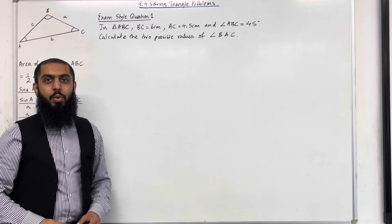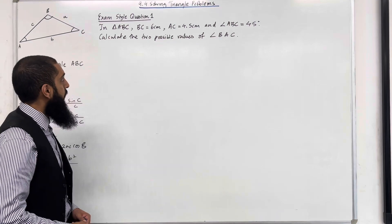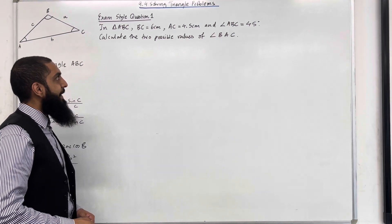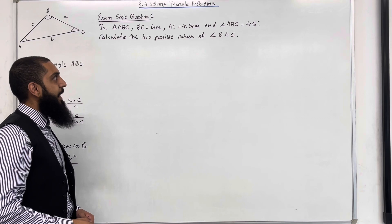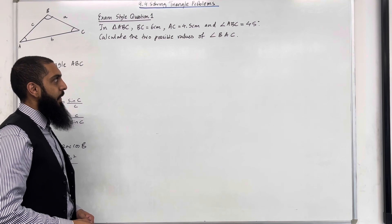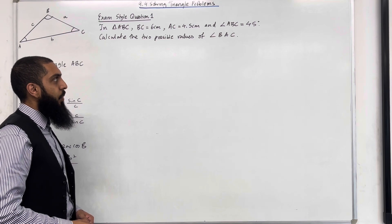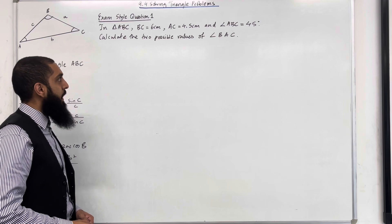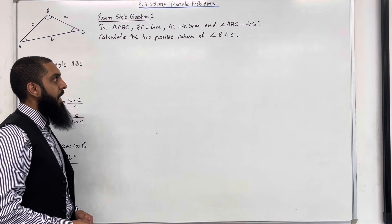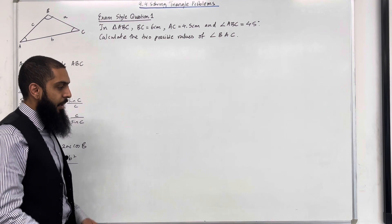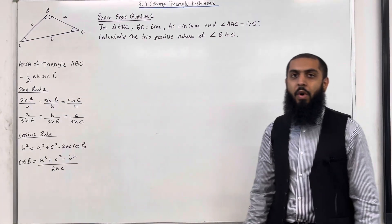Here is exam-style question 1. In triangle ABC, BC is equal to 6 cm, AC is equal to 4.5 cm, and angle ABC is equal to 45 degrees. Calculate the two possible values of angle BAC.